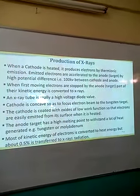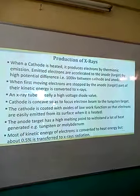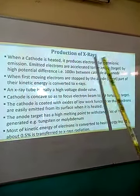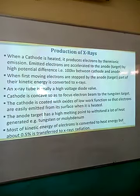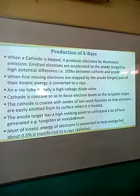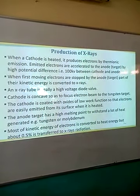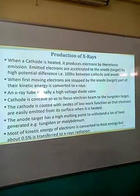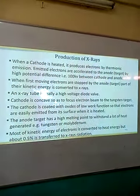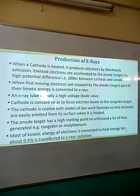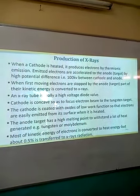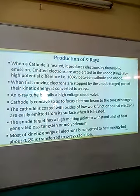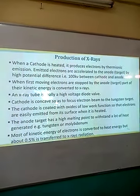Next, we have the production of X-rays. The first step involves the heating of the cathode. Once the cathode is heated, electrons are produced by the process of thermionic emission. The electrons are then accelerated towards the anode, which we call the target. The potential difference between the anode and the cathode is very high, always at 100 kilovolts. This potential difference is what accelerates the electrons to the target. The fast-moving electrons are stopped by the anode, which is the target. Once stopped, the kinetic energy of these electrons is converted into heat energy, and only 0.5% is converted to X-rays.